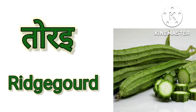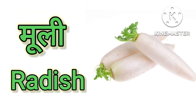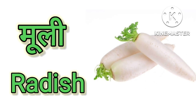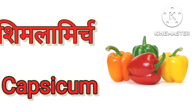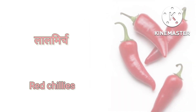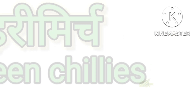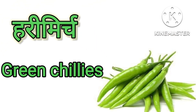Tarai – Ridge Gourd. Mooli – Radish. Shimla – Capsicum. Lal Mirch – Red Chilis. Hari Mirch – Green Chilis.